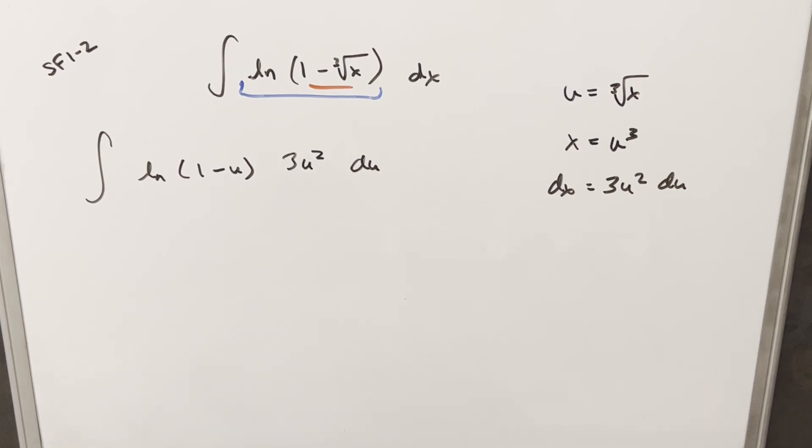And I do this using the DI method or tabular integration. So we'll have two columns, one to differentiate, one to integrate. And of course, I want to differentiate natural log because that's hard to integrate. So we'll differentiate this. I'm just going to integrate this 3u squared. Now the integral, this is nice because we just differentiated it. So this is going to give me u cubed. And then here, the derivative here is going to be just 1 over 1 minus u. But because we have a minus on the u with the chain rule, we can't forget that we need a minus up here.